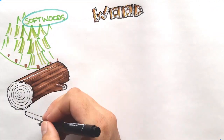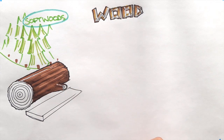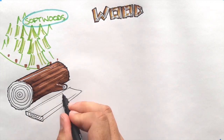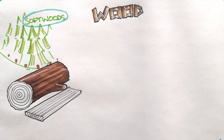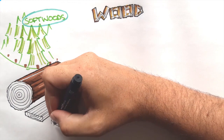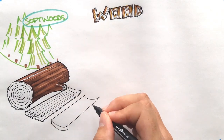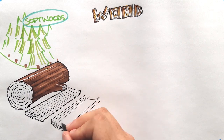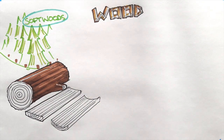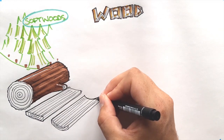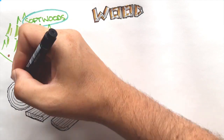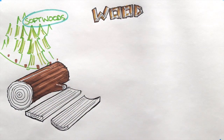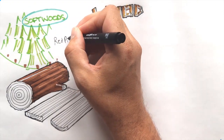If we turn our log into planks, like lumber, we can see these growth rings on the ends of the wood. What happens here is that occasionally, if they're not dried properly or depending on the cut of the wood, wood can warp. The warp is the growth rings themselves actually pulling the plank into a curve following the growth rings themselves. There are two types of softwoods you need to be familiar with: red pine and spruce.